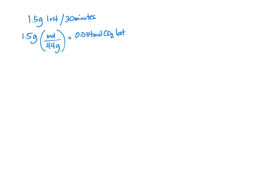What's the easiest thing to do next? Let's do it per 30 minutes. Let's divide the whole thing by 30 to figure out CO2 per minute. If we multiply or divide that across, we'll calculate that 0.0011 moles of CO2 were lost per minute.